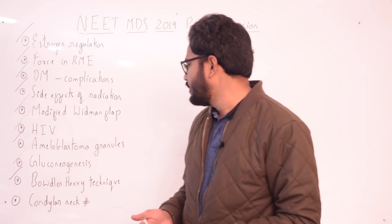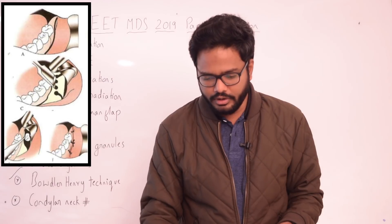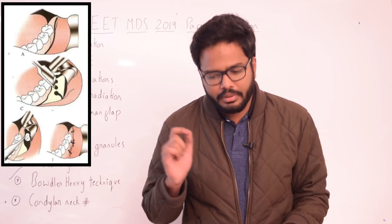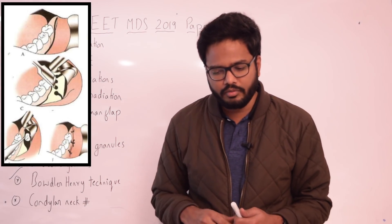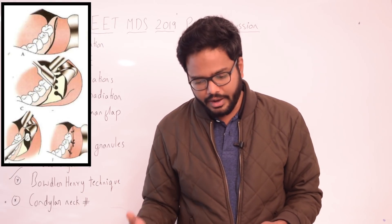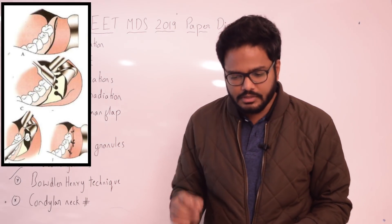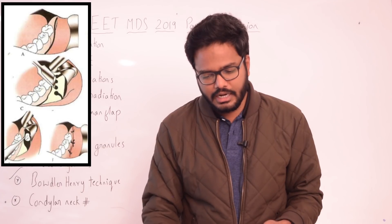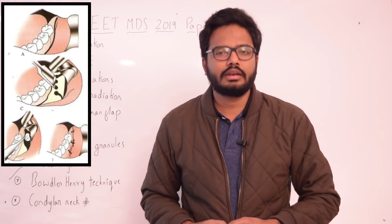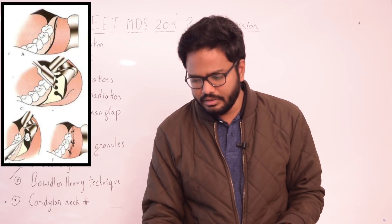Moving on to the Bowdler Henry technique — where is it used? It is used for impacted lower third molars. Complications associated with surgical removal of impacted teeth include periodontally compromised adjacent teeth, root fracture, neuropathy, sinus involvement, and osseous defects. To overcome these, Bowdler Henry and Hovey described the lateral trepanation technique for removal of the lower third molar.